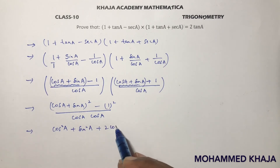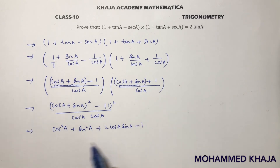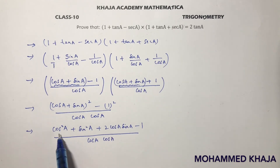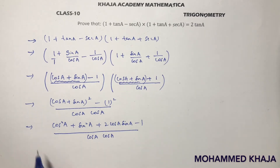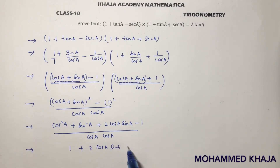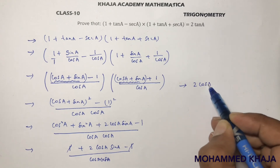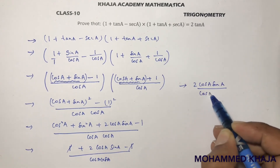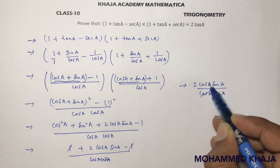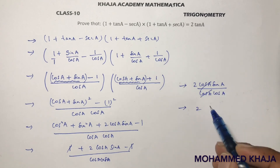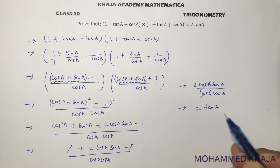Expanding: cos²a + 2 sin a cos a + sin²a - 1, divided by cos²a. Since cos²a + sin²a = 1, the 1 and -1 cancel, leaving 2 cos a sin a / cos²a. The cos terms cancel, giving 2 sin a / cos a, which is 2 tan a.